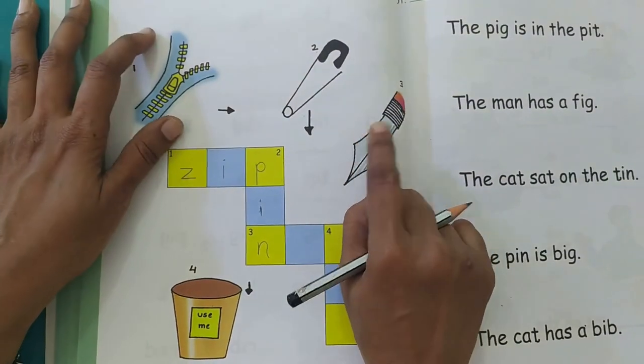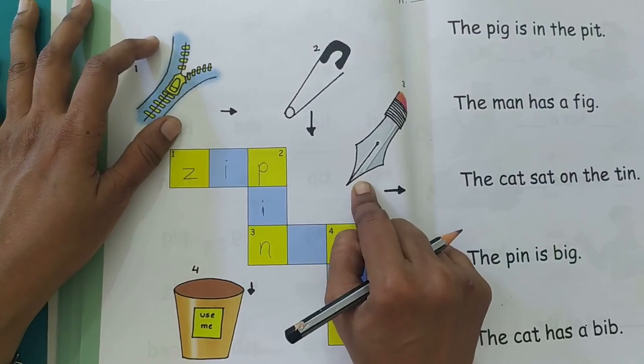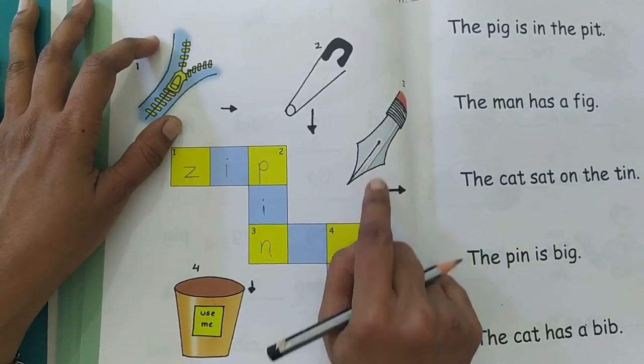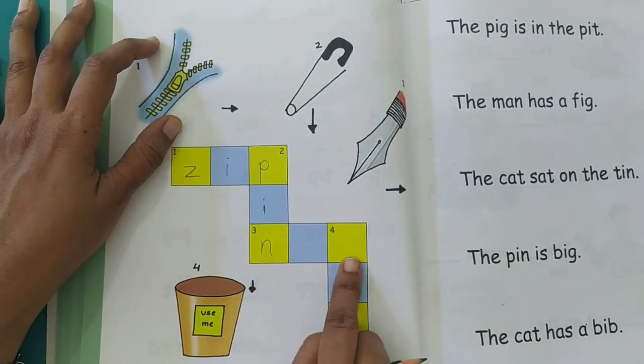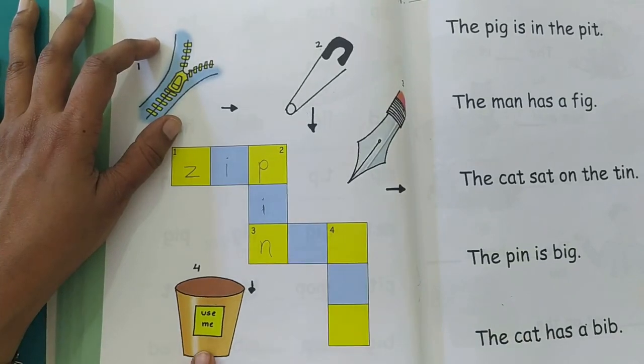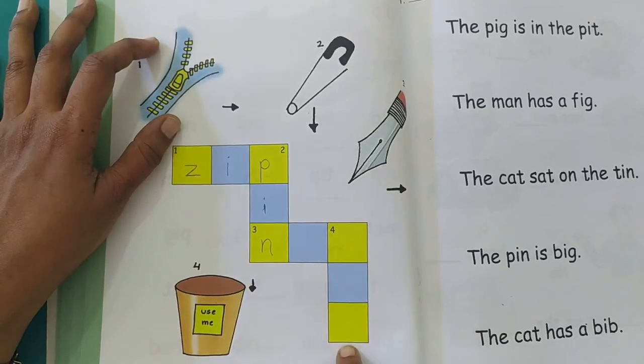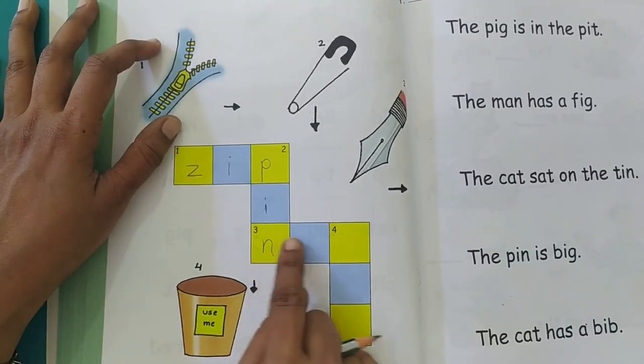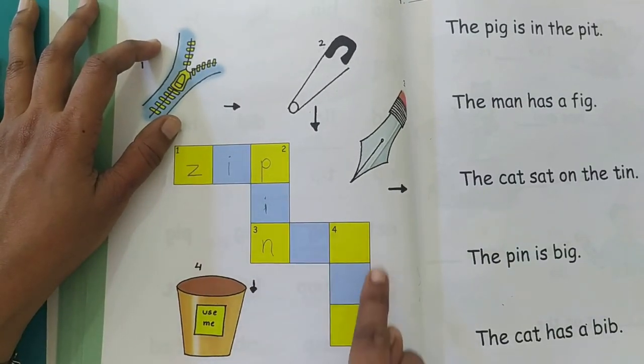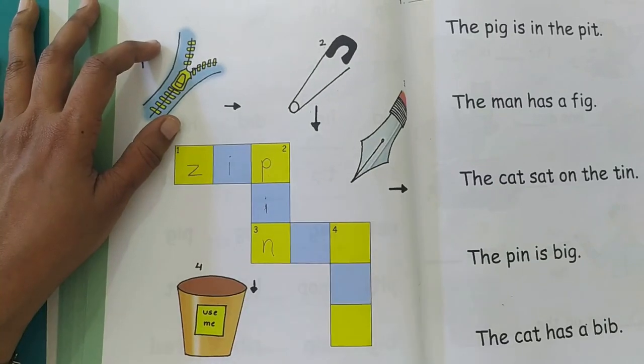In the same way you have to complete the rest of the crossword. Let's look at what the pictures are. This is a NIB. And this is a BIN, as in a dustbin. So children, I have sounded up the words. You have to write it over here and complete the crossword.